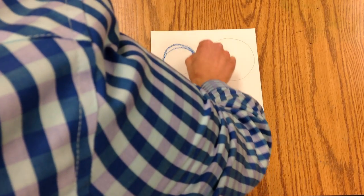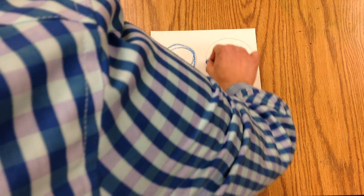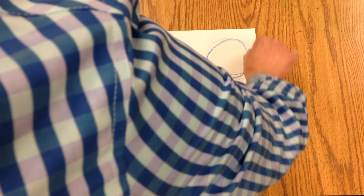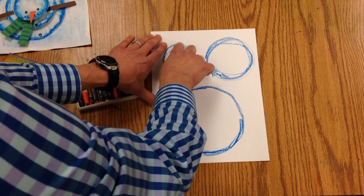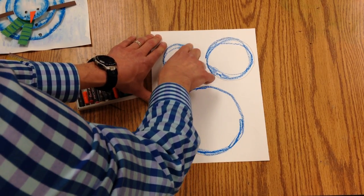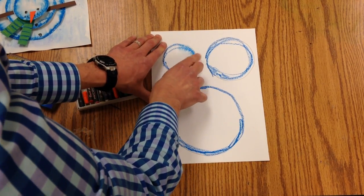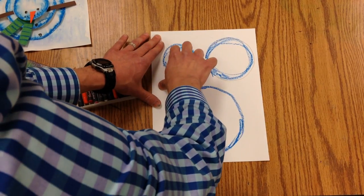Then we're going to take our fingers and we're going to smudge towards the center, and that will make it look like it's a round little snowball.